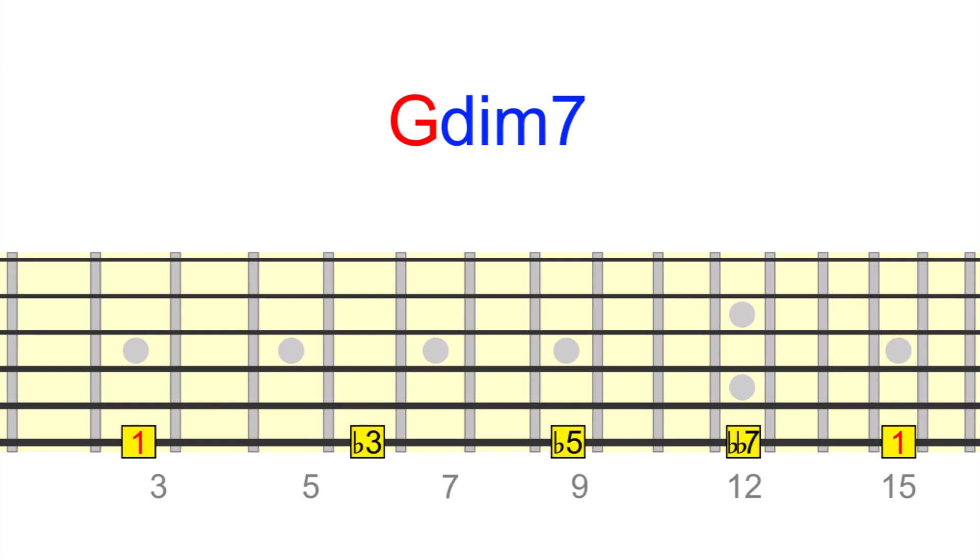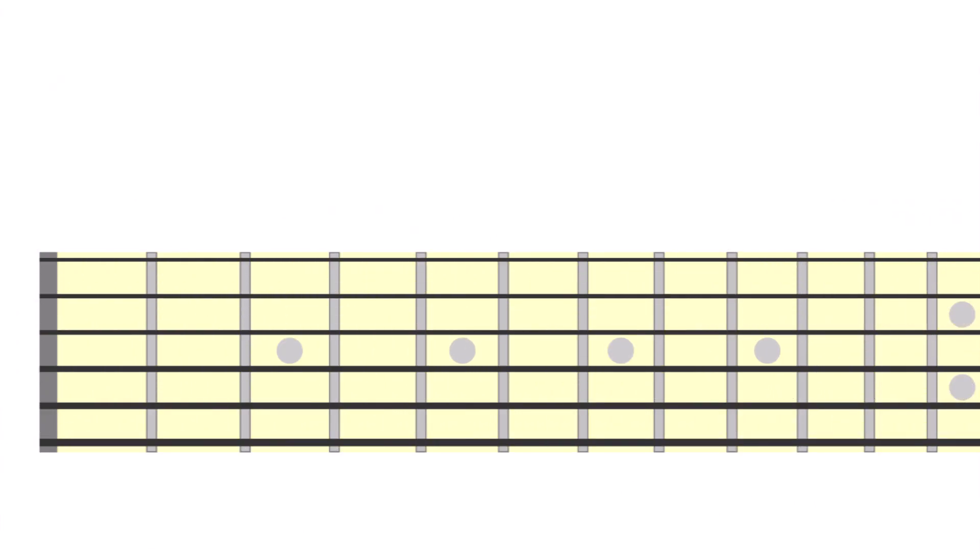So, keep in mind that, in all the examples we'll be looking at, you can position the diminished 7th shape in several places, based on its minor 3rd symmetry, to create different voicings of this same chord. Let's now look at how diminished 7th chords can function in our progressions.